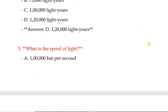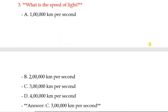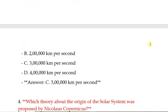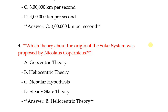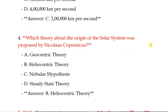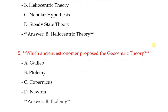What is the speed of light? 3,00,000 km per second. 4th question: Which theory about the origin of the solar system was proposed by Nikolaus Copernicus? Heliocentric theory. Which ancient astronomer proposed the geocentric theory? Ptolemy.